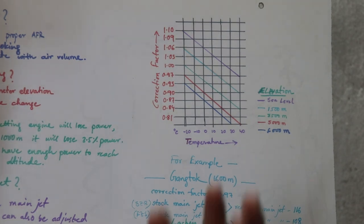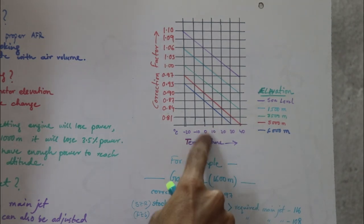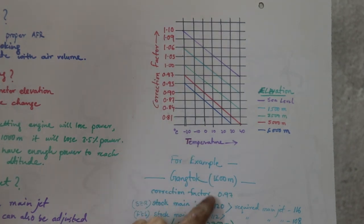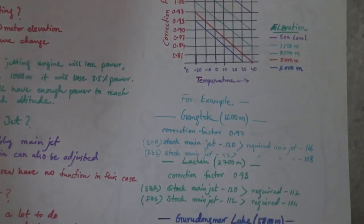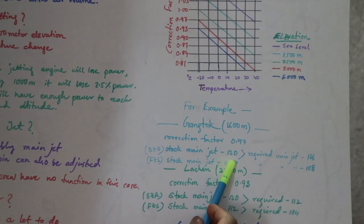So let's take the average, 15 degrees, and it intersects at this point. This point refers to 0.97 correction factor. Now you get the point, right? How you can take the correction factor. You have to take a power line from here and then consider the temperature, and the intersecting point is your correction factor. In Gangtok the correction factor is 0.97. Multiply this with stock jet. I have considered here two bikes, SZ and FZ. In stock jet I have 120, so I need to change it to 116 in order to maintain proper air to fuel ratio.